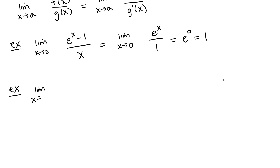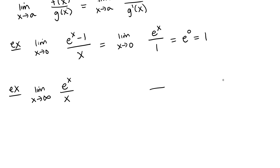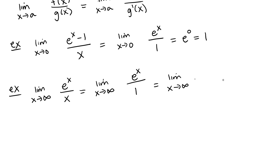Another example: let's look at the limit as x goes to infinity of e to the x divided by x. This one has the form infinity over infinity. So we can apply L'Hôpital's Rule and take the derivative of the numerator, which gives us e to the x, and the derivative of the denominator, which gives us 1. So we end up with just the limit as x goes to infinity of e to the x. This is going to go off and diverge because it grows without bound.